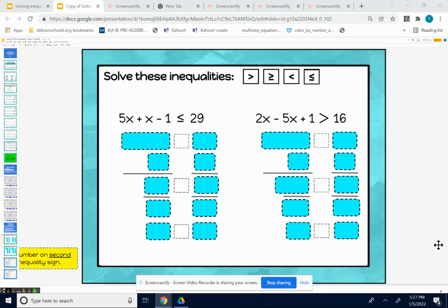We have two multi-step inequalities here. The first one is 5x plus x minus 1 is less than or equal to 29.